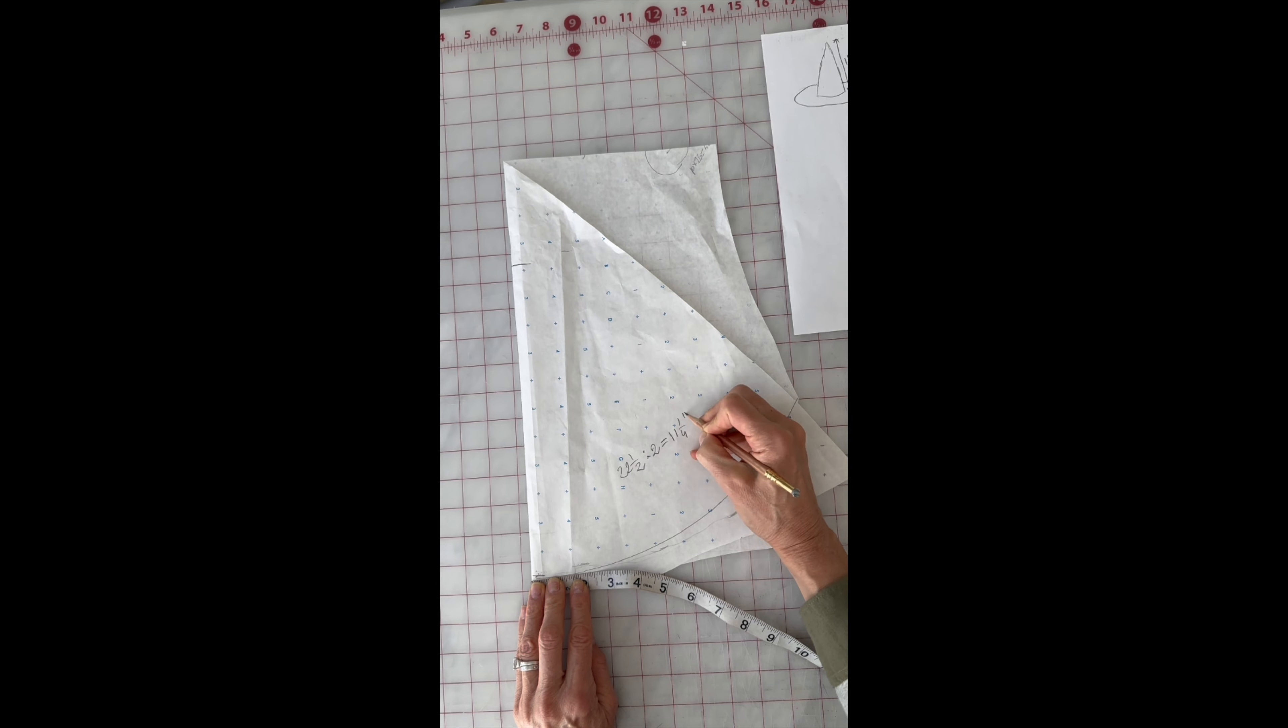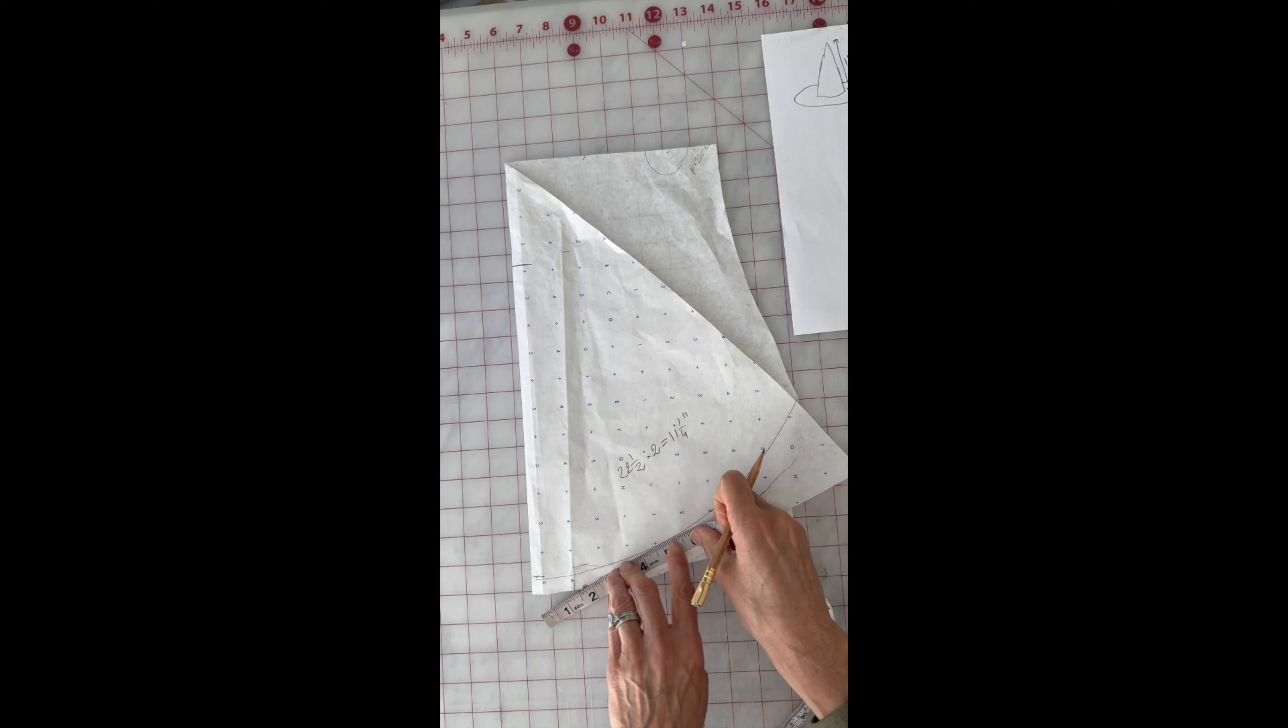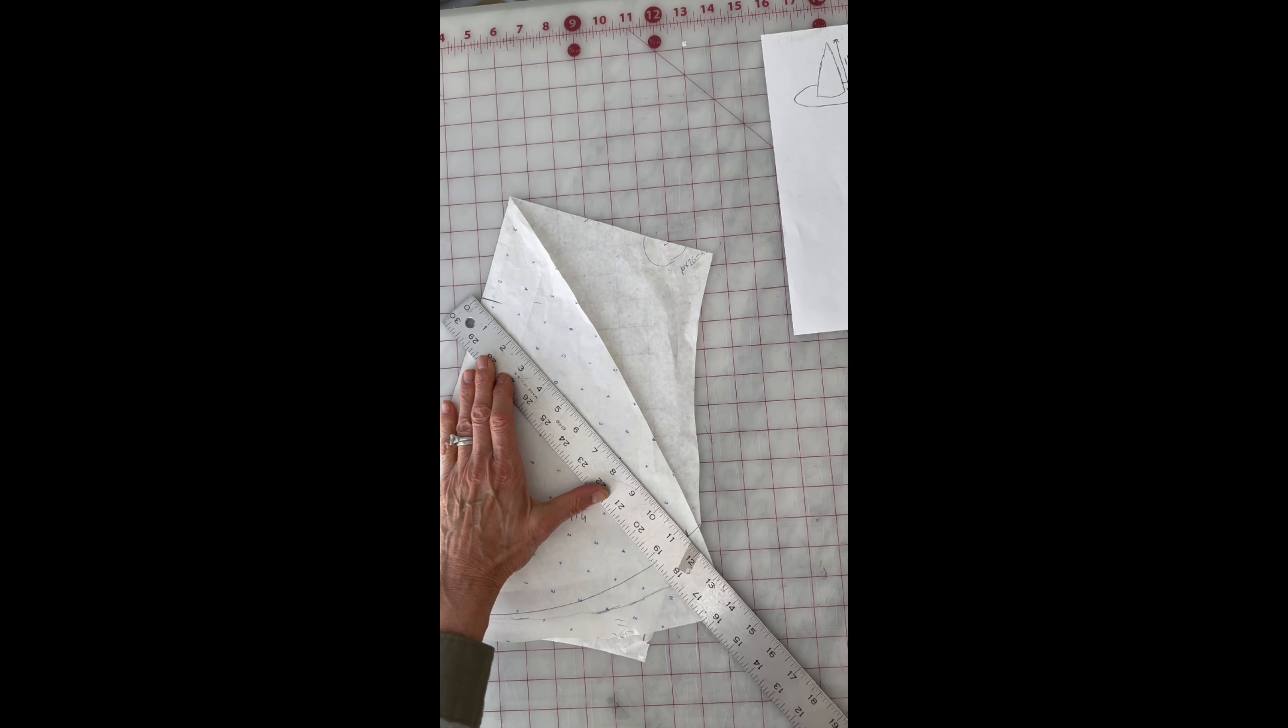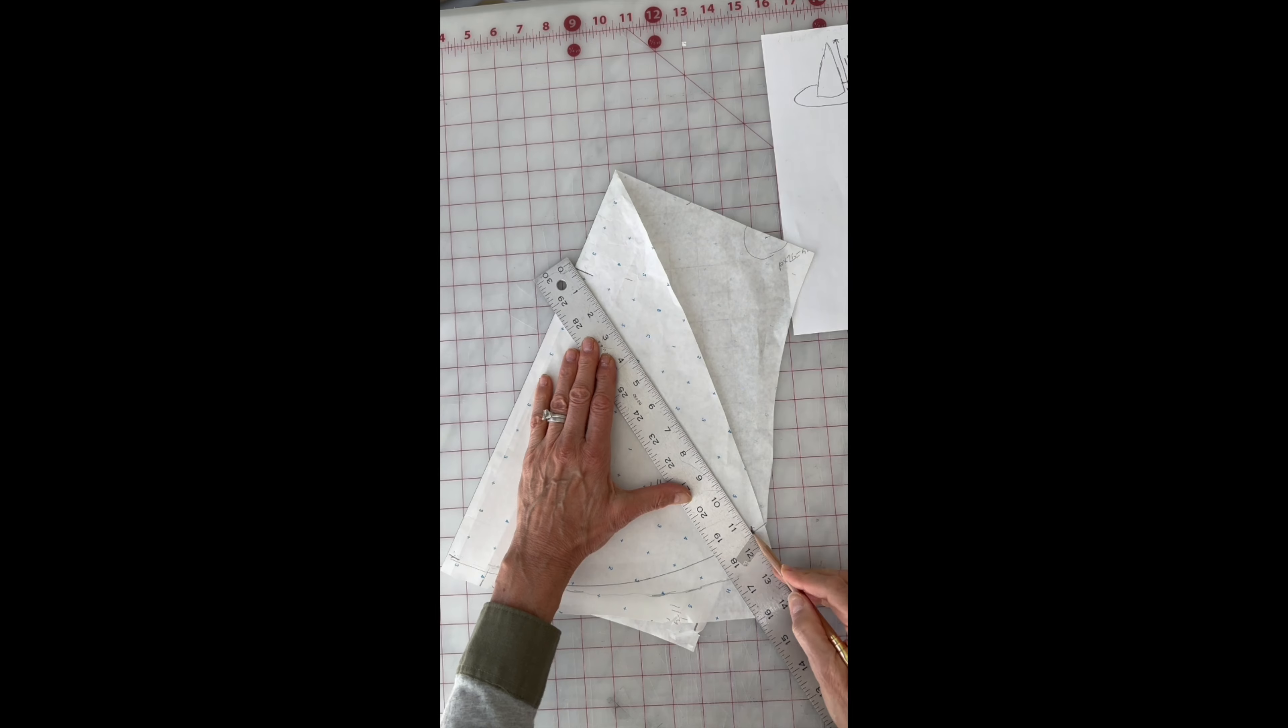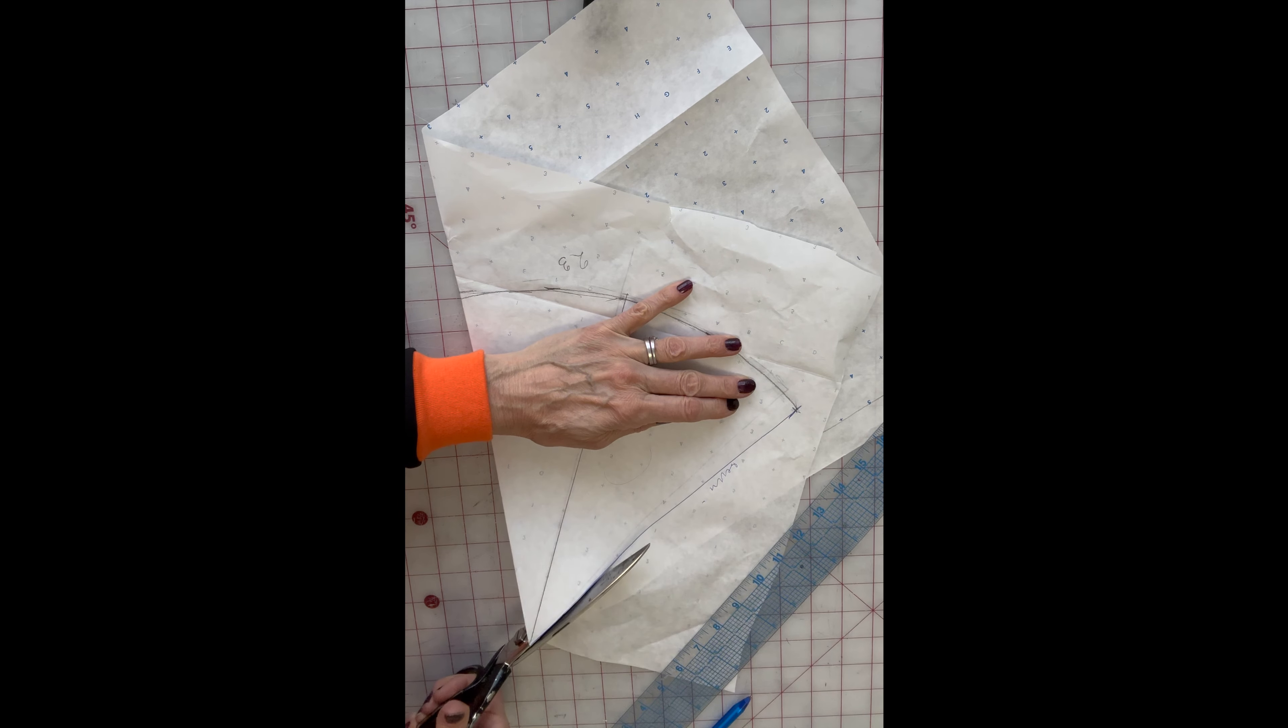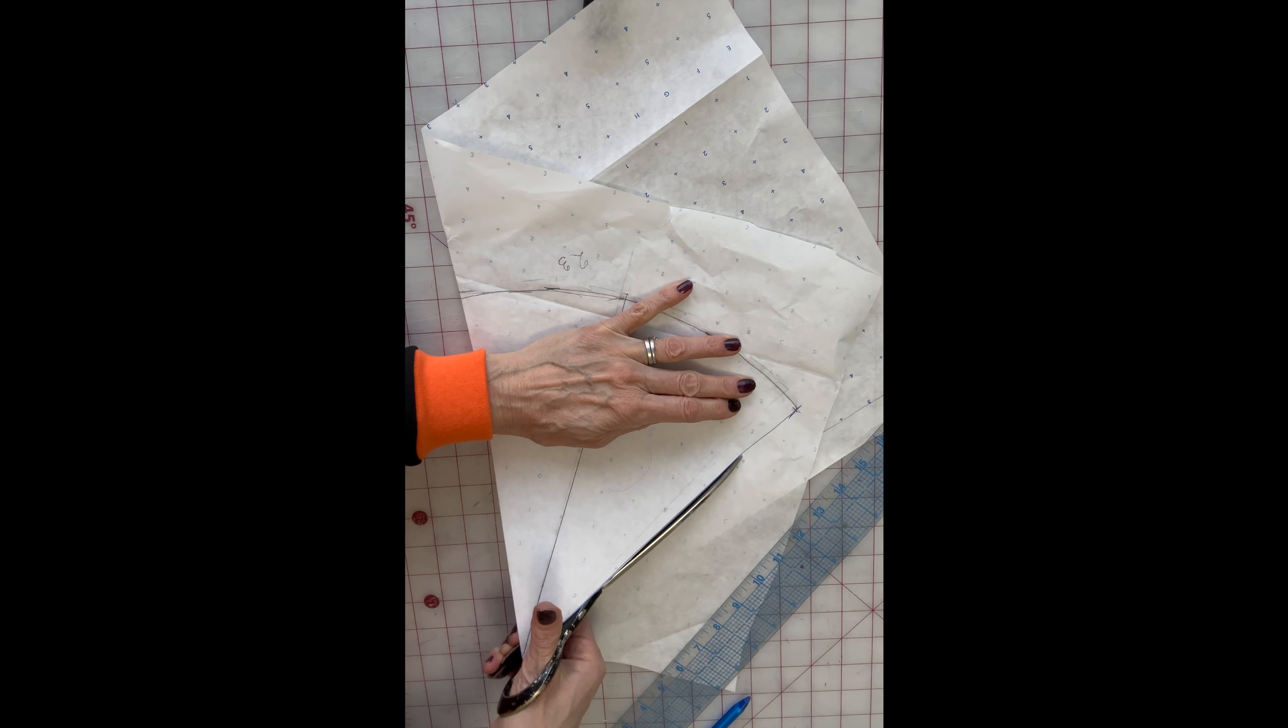Now measure half of the head circumference and connect the marking to the center of the radius. Let's cut this. No seam allowances - we can add seam allowances later.